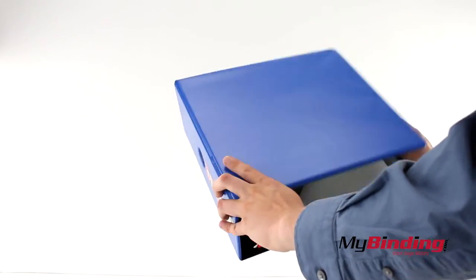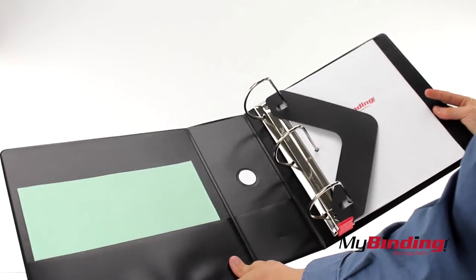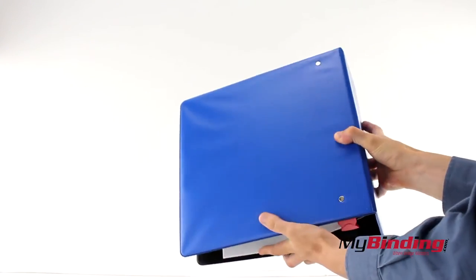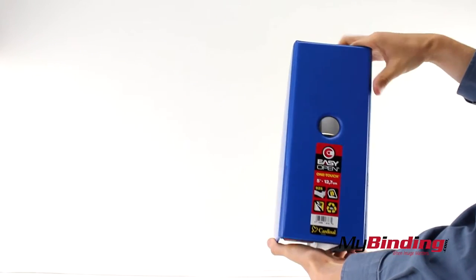It may dwarf all the other smaller sizes, but this gives you a good idea of what you'll get with these EasyOpen Slant Ring Binders. Oh, and there are a couple colors to choose from.